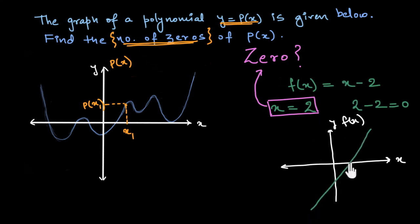This x-axis would represent the values of the input variable, and the graph of this polynomial would be a straight line something like this. And this point here would represent the zero of this polynomial x minus 2 because the y-coordinate of this point is equal to 0. The value of the polynomial is 0.